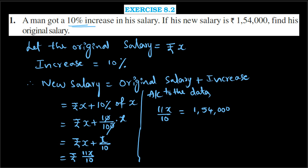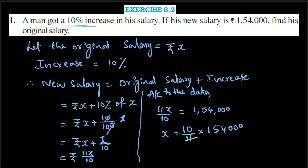We need to find the value of X. From 11X/10 = 1,54,000, we get X = (10/11) × 1,54,000. Cancelling 11 into 1,54,000: 11 times 14,000 is 1,54,000, leaving 10 times 14,000. That equals Rs. 1,40,000. This will be his original salary.